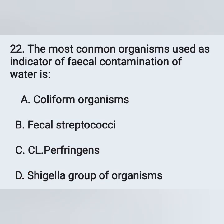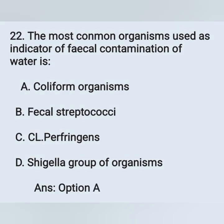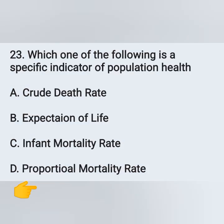Question number 22: the most common organism used as an indicator of fecal contamination of water is — option A: coliform organisms, option B: fecal streptococci, option C: Clostridium perfringens, option D: Shigella group. The most common organism used as an indicator of fecal contamination of water is coliform organisms — option A is the correct answer.